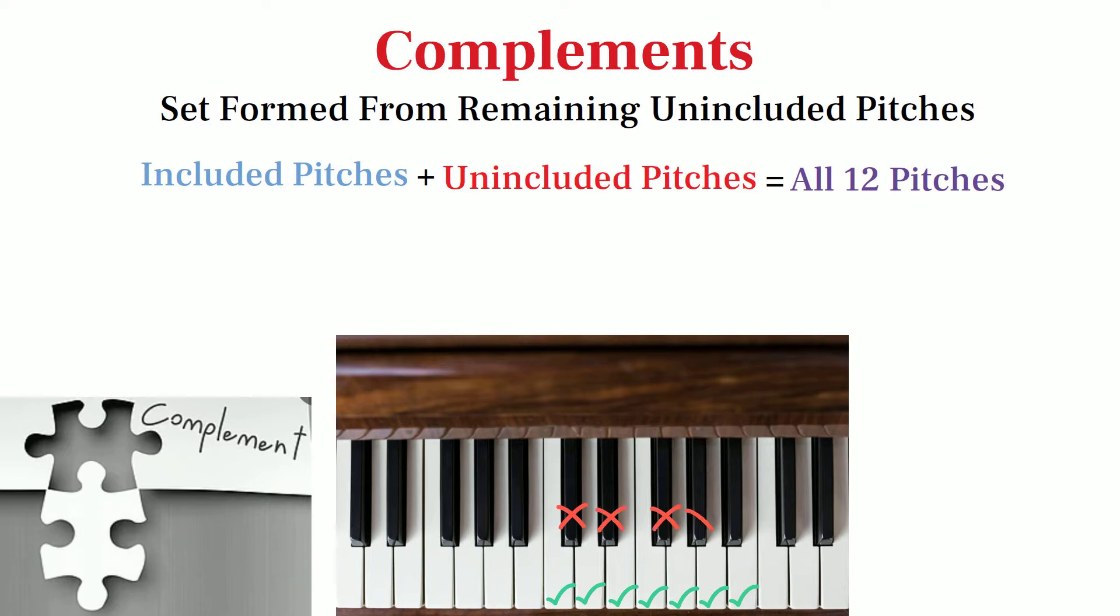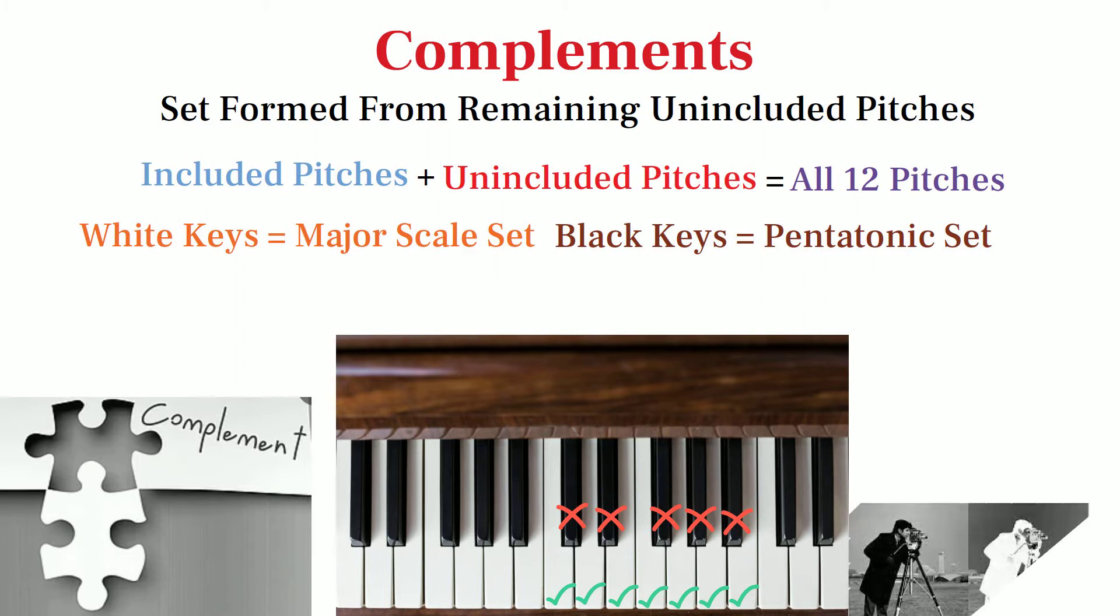The white keys form the major scale set, while the black keys are the only keys we didn't use in the octave, and they form the pentatonic set. Since the black and white keys together form all twelve tones, this means that the major scale and pentatonic scale are complements of each other.